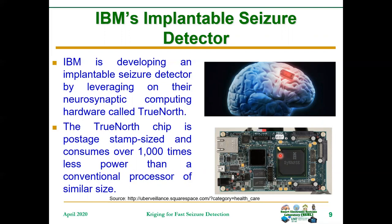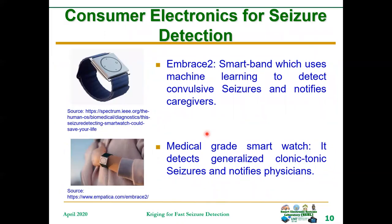For example, this is IBM's implantable seizure detector that uses neurosynaptic hardware whose size is about the size of a postage stamp, and it is implanted in the brain to detect seizure. There are also consumer electronics products in the market for detecting seizure. For example, this wristband device works by detecting the conductance level of the skin. When there is seizure, the conductance level of the skin is high. They set a particular threshold, and once the conductance level rises above that threshold, the seizure is flagged.